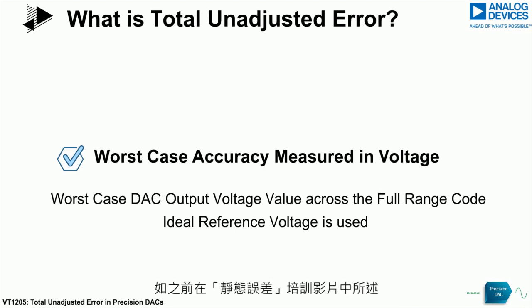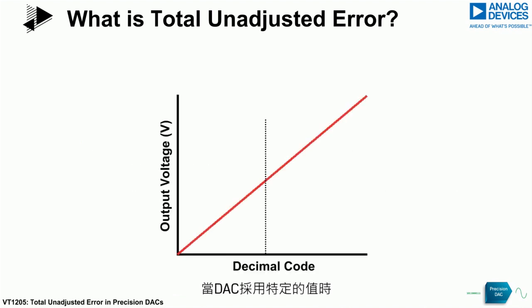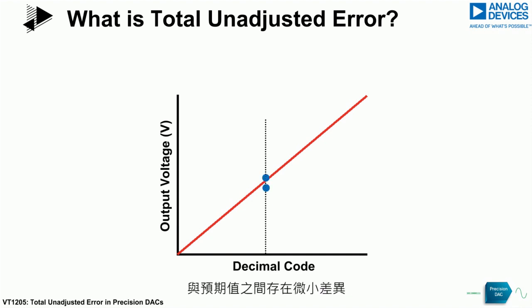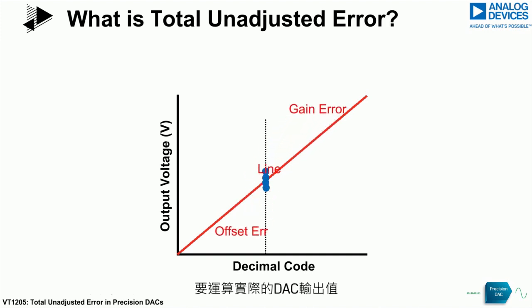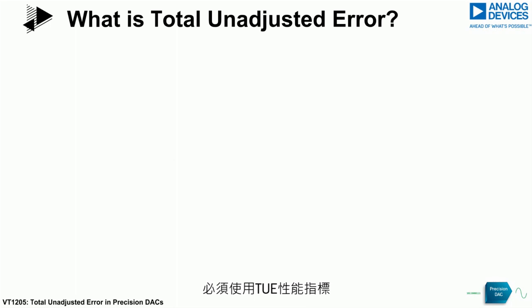As stated in the previous video on static errors, when a DAC is programmed with a particular value, the corresponding DAC output is loaded with a value that is slightly different from the expected value. This deviation between the programmed and loaded values occurs due to DAC errors that must be accounted for. To calculate the actual DAC output value, the TUE specification must be used.